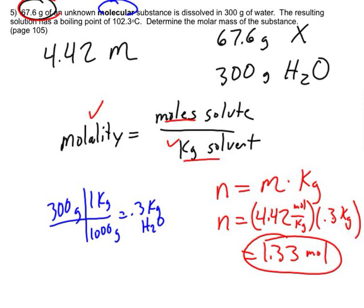I still haven't used the 67.6 grams. So let's think, there are 67.6 grams, and that represents 1.33 moles. If I divide those two numbers, I get 50.83 grams per mole. And that is my molar mass of my unknown.